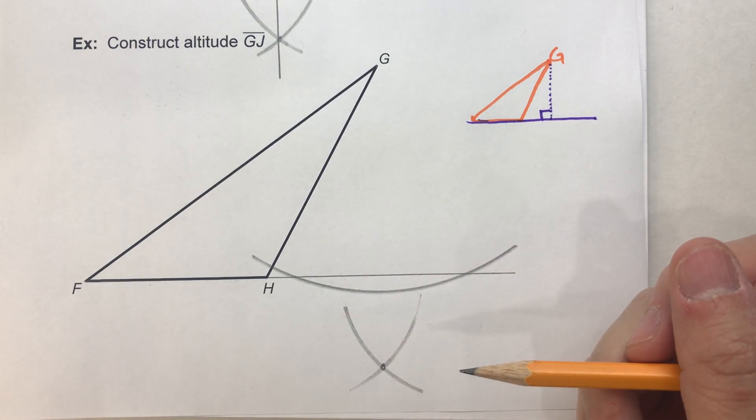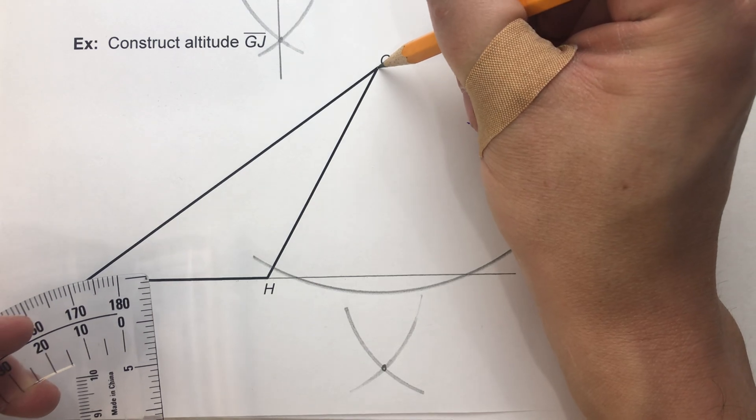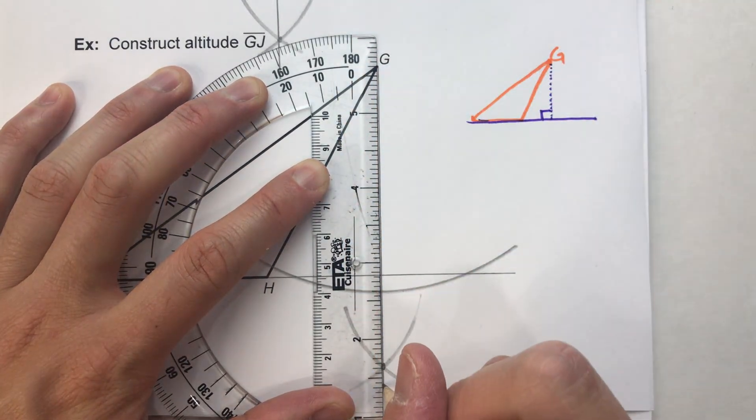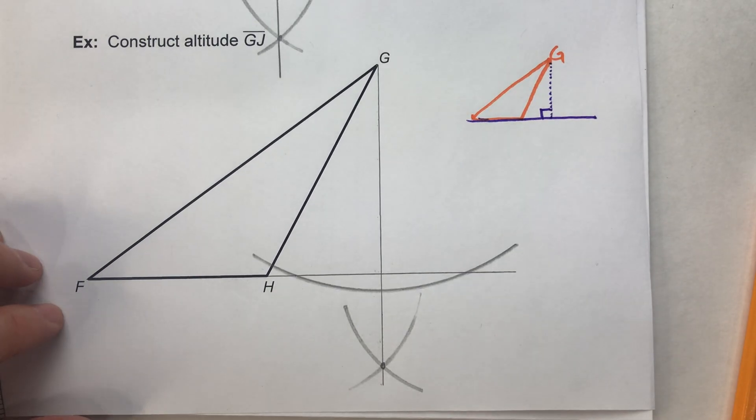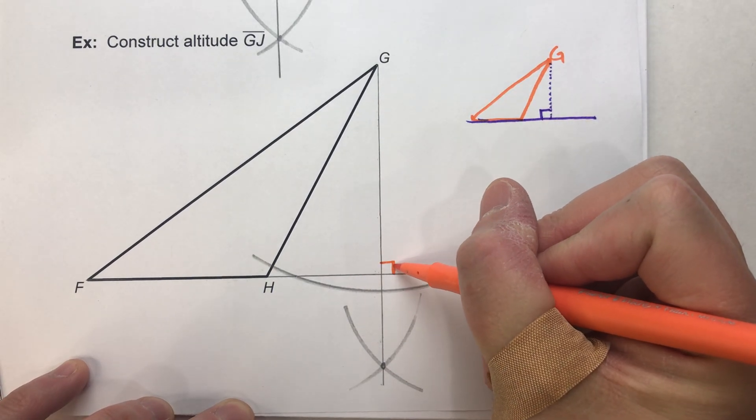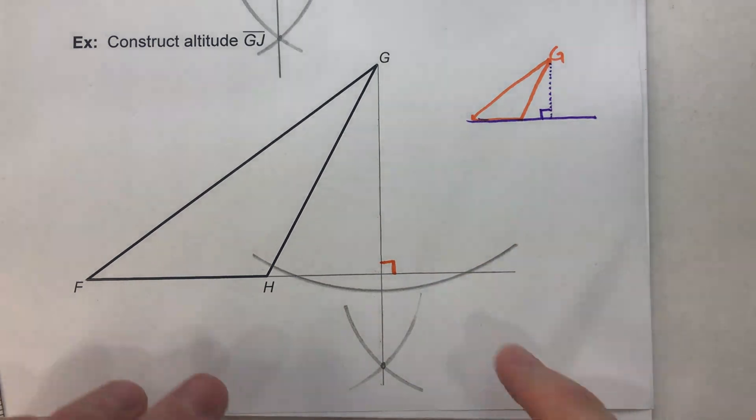That's where our altitude is going to go through. So it's going to go from G through that spot right there. There we go. And we know this is perpendicular because we've basically just created a perpendicular to a line.